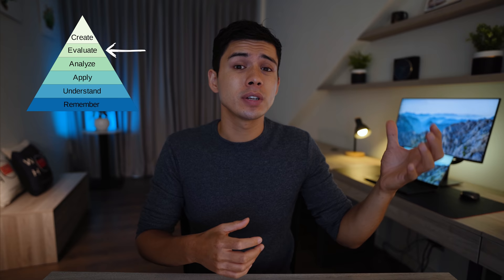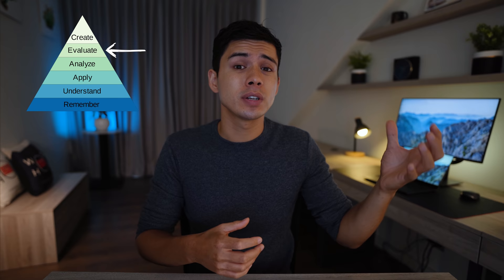Level five: evaluating. Evaluating is really about using your knowledge and understanding of a subject to make your own judgments and critiques on given information. You might be asked to review a solution to a problem, critique it, and offer your own opinion on how it could be done better. With this level of understanding, there is often no right or wrong answer — it's more opinion-based, so it really encourages you to think outside the box. It's completely different to the first level, and unlike levels two to four, at level five you add information — you give your opinion and contribute your own ideas.